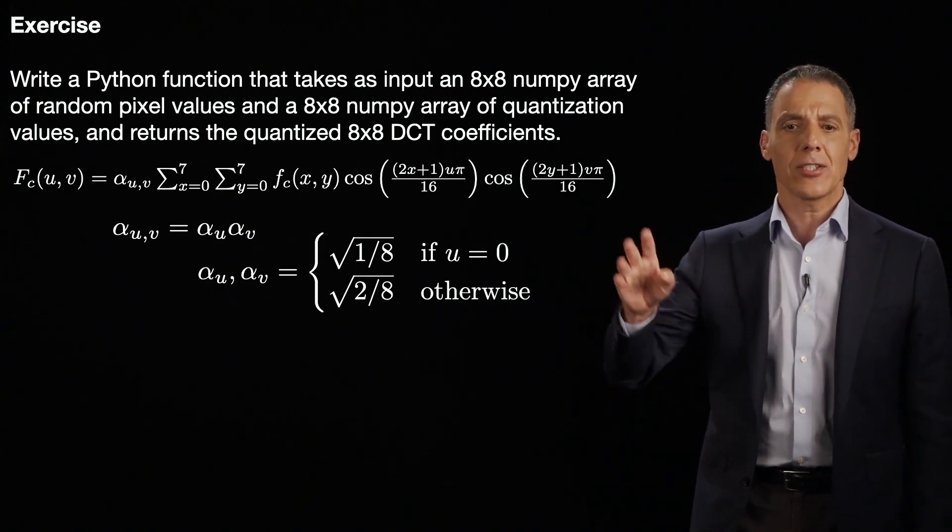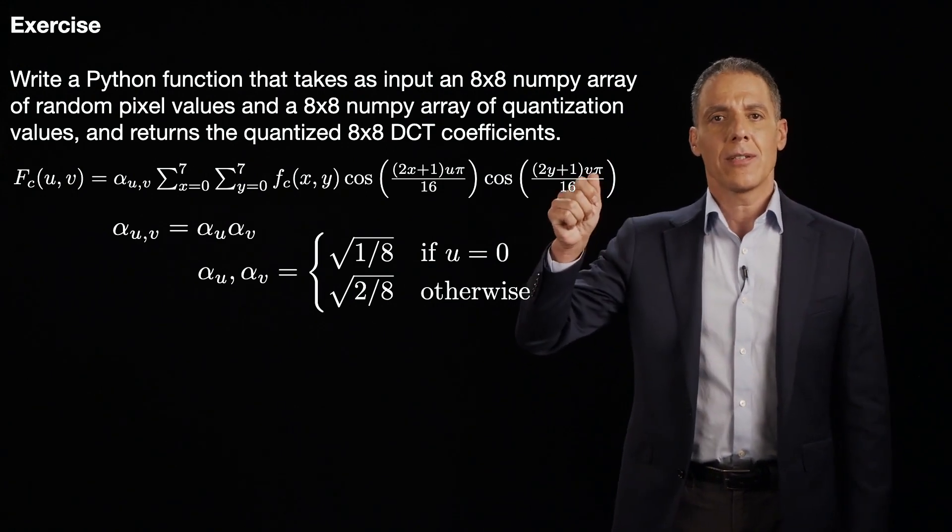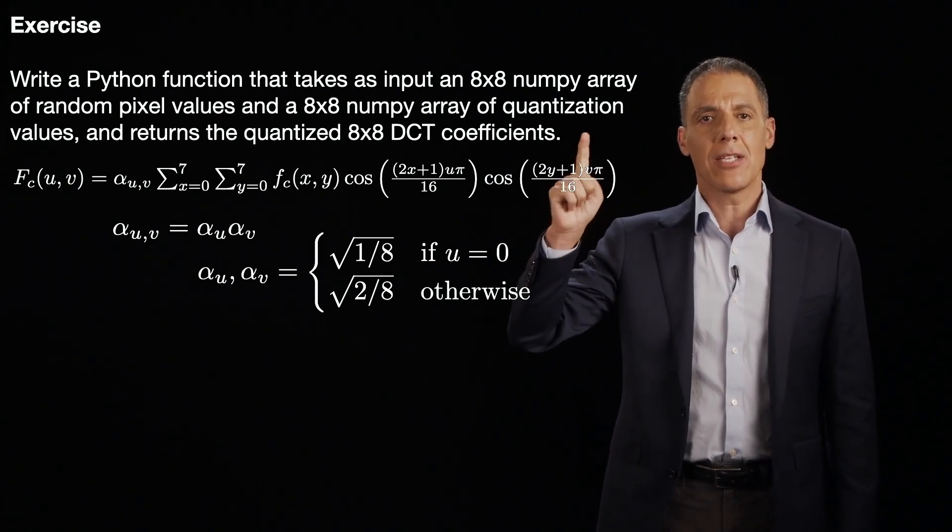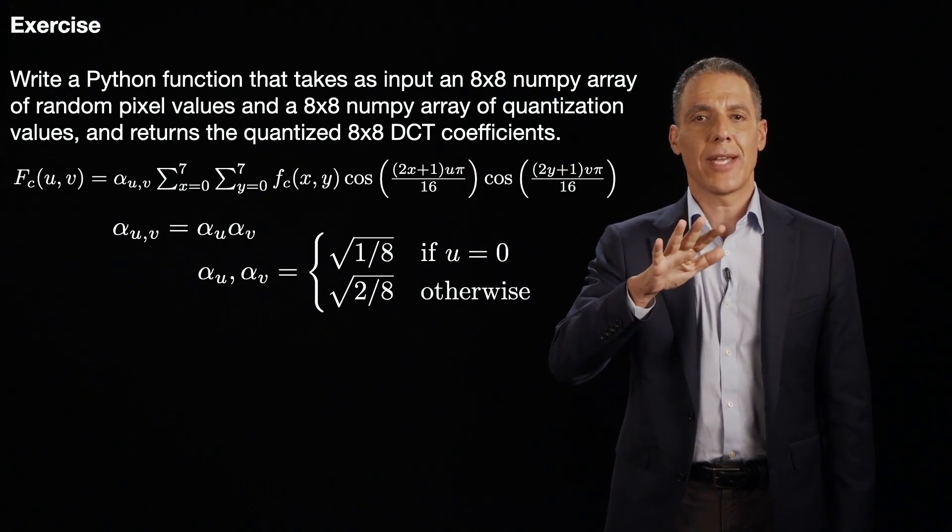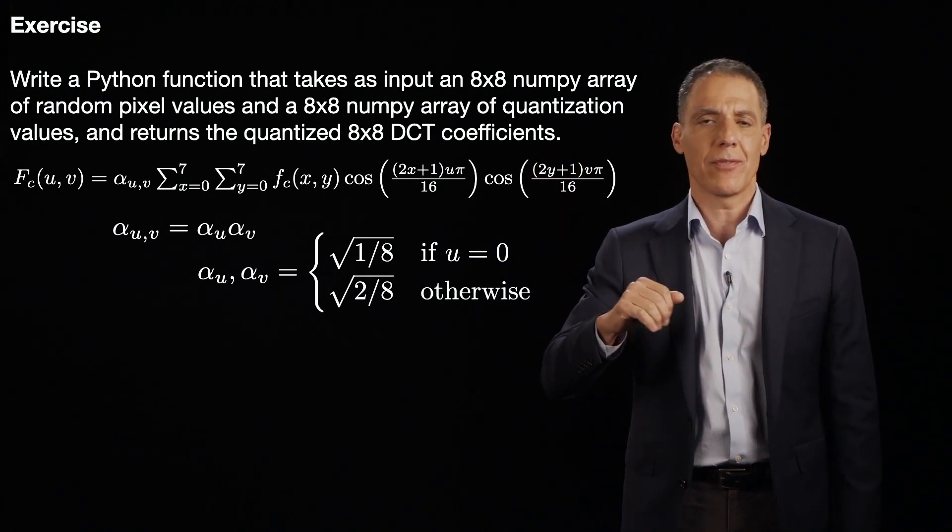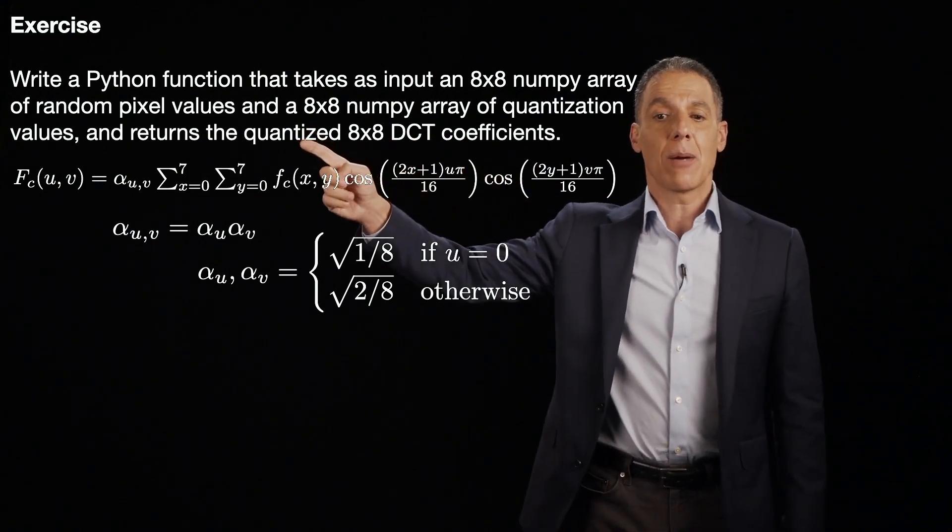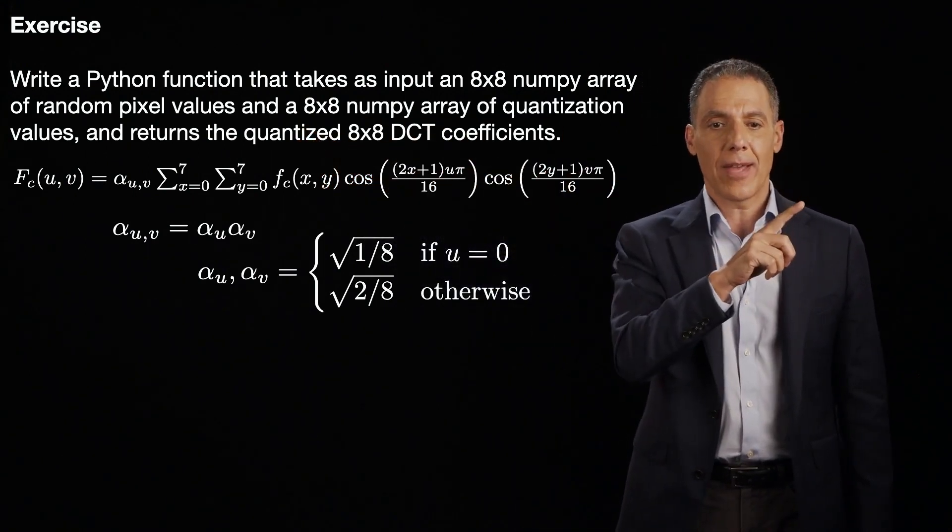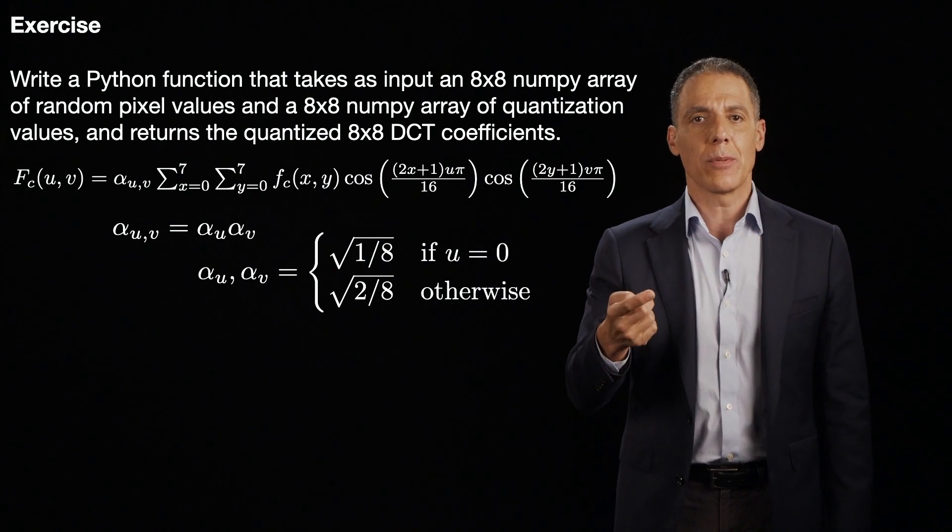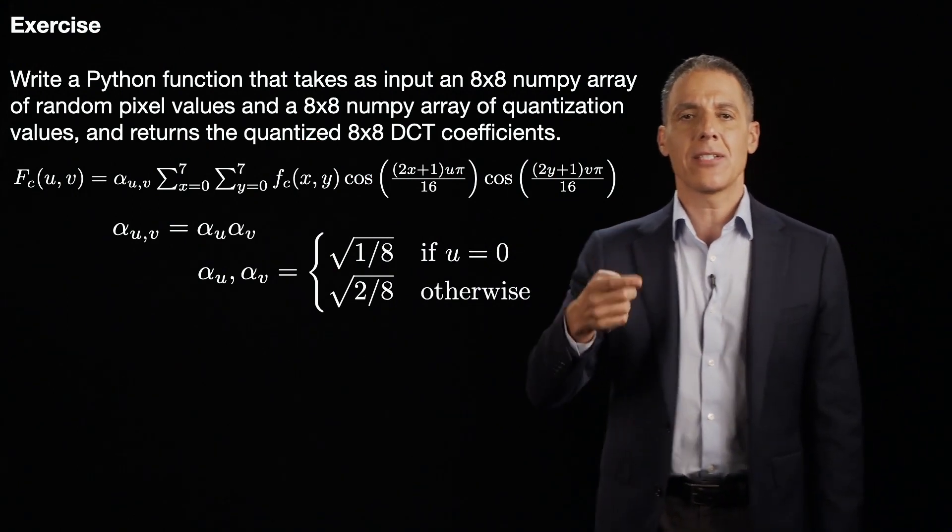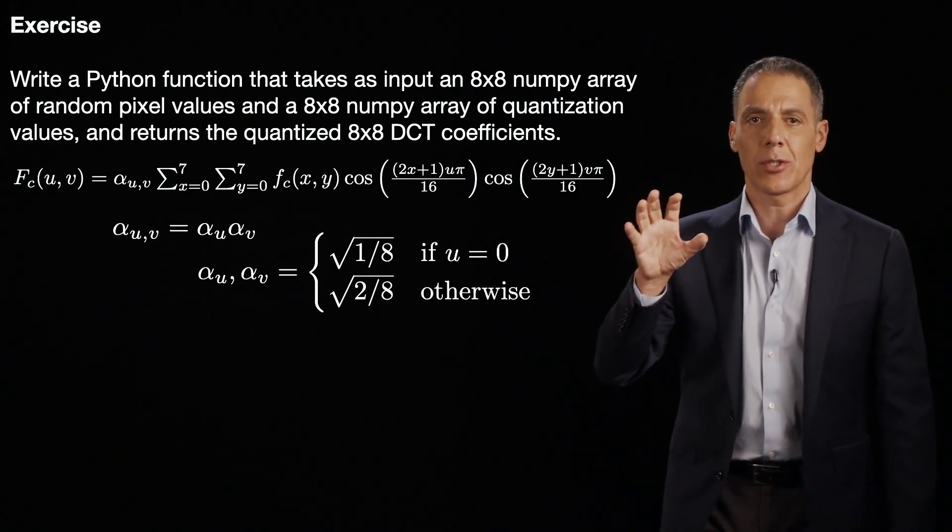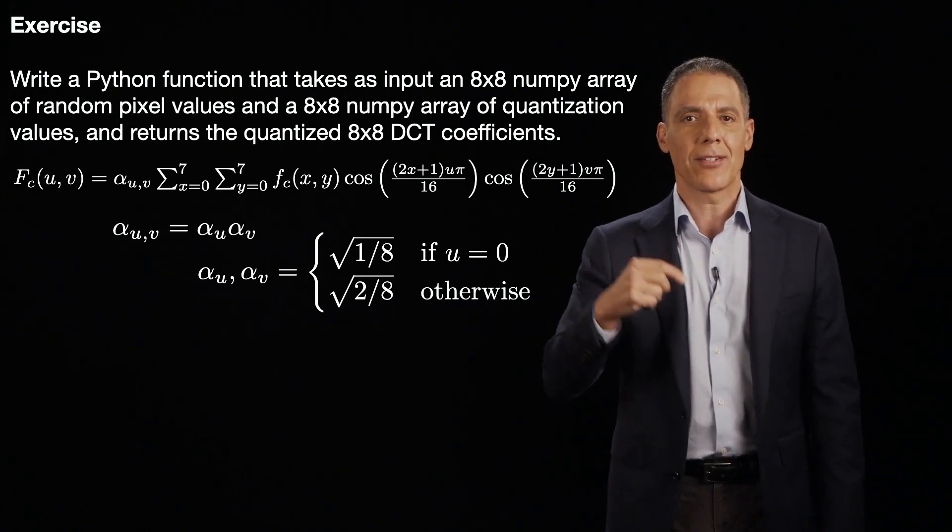Here's the exercise. Please write for me a Python function that takes as input an 8x8 numpy array of random pixel values. So just numbers between 0 and 255. It can be anything. It's a luminance channel. And an 8x8 numpy array of quantization values. And return for me, please, the quantized 8x8 DCT coefficient. So what you're going to do is you're going to compute the DCT. We're going to go through that in a second.